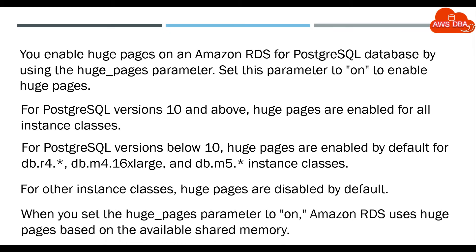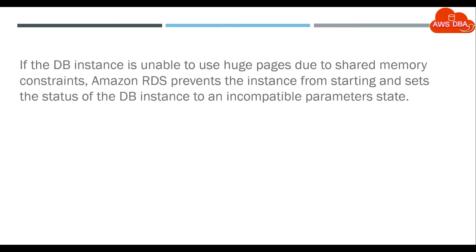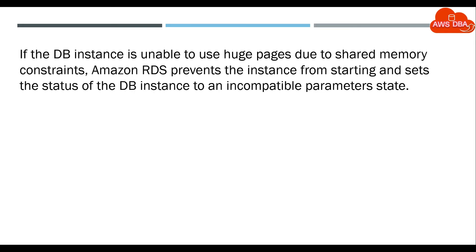When you set the huge_pages parameter to on, Amazon RDS uses Huge Pages based on the available shared memory. If the DB instance is unable to use Huge Pages due to shared memory constraints, Amazon RDS prevents the instance from starting and sets the status of the DB instance to an incompatible parameters state.